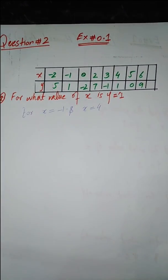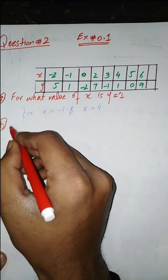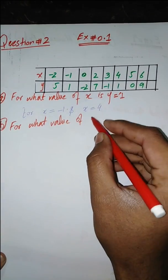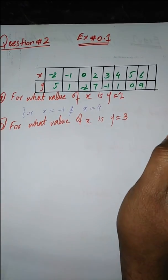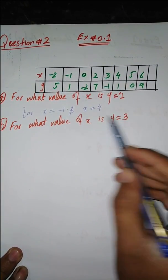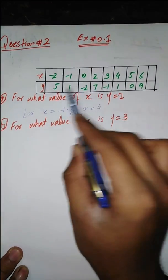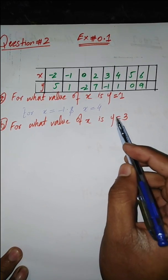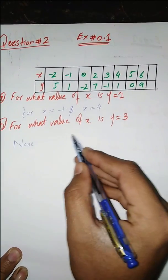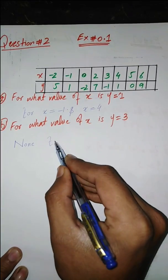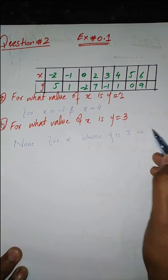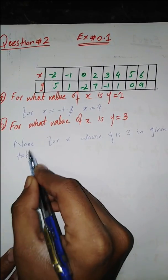The next part asks: for what value of x is y equal to 3? Looking at the table, there is no point where y equals 3. So there is no value of x in the given table where y equals 3 — the answer is none.